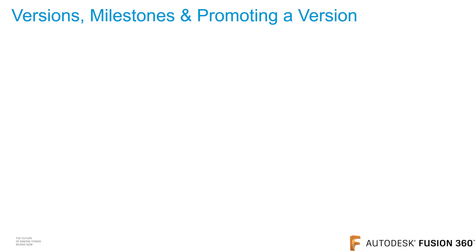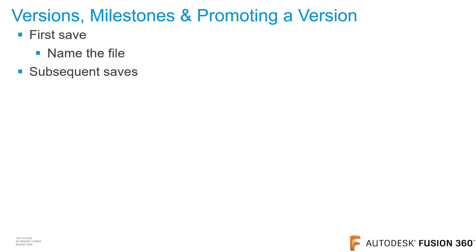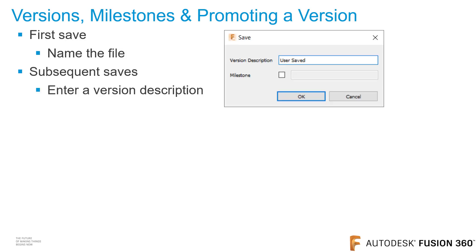Now I'll discuss versions and milestones. The first time that you save a file, you're going to give the file a name. On subsequent saves, enter a version description that states what was changed. The description appears next to the version number in the data panel. When saving a file, you also have the option to create a milestone. When a file is saved as a milestone and inserted into another assembly, only versions set to milestone will be updated in the referenced assemblies. Milestones prevent assemblies from being updated every time a referenced file is saved.